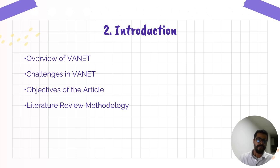Regarding literature review methodology: a systematic literature review was conducted across multiple databases, including IEEE Xplore, ScienceDirect, and Scopus. Various research queries were employed to identify relevant articles. Criteria included critical assessment of their pertinence to the research topic and content quality. The review highlighted significant technical challenges and proposed solutions within VANET, the application of artificial intelligence in VANET, and software-defined networks.